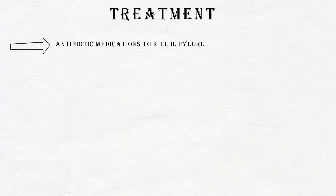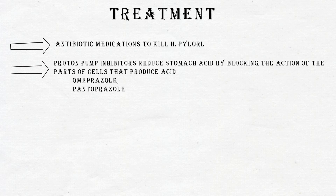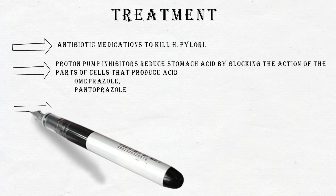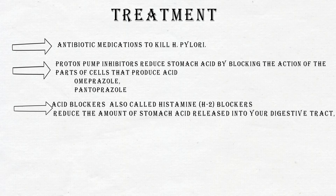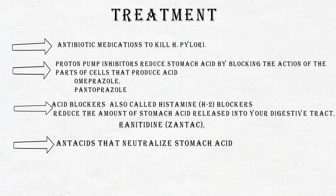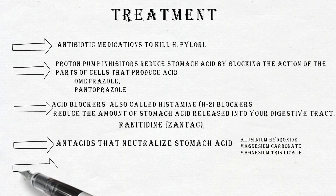Next is treatment. First is killing of bacteria by antibiotics. Next is proton pump inhibitors, which reduce stomach acid by blocking the action of the G-cells. Next is acid blocking by using histamine-2 inhibitors, which reduce the amount of acid released in the stomach. Next are antacids that neutralize the stomach acid, and finally medication that protects the lining of the stomach, small intestine, and esophagus.